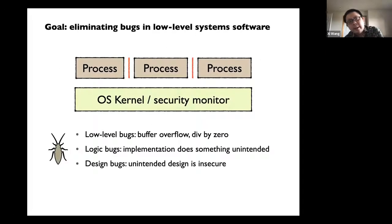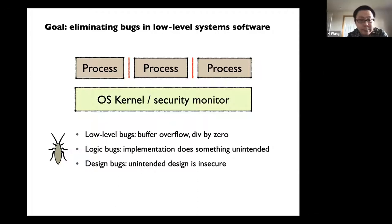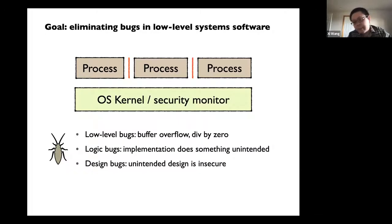The kind of systems we're going to talk about will be those low-level systems. And our goal is simple: we want to kill bugs. We don't want to have those bugs in our systems. So the first question is: what kind of bugs?